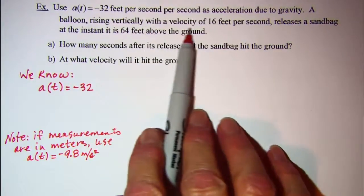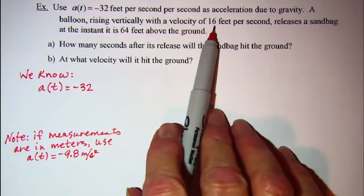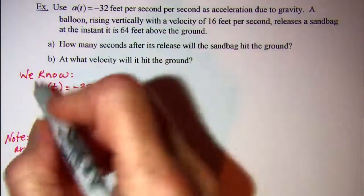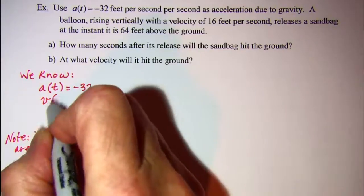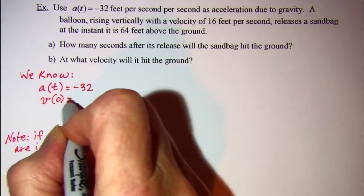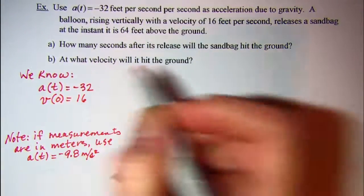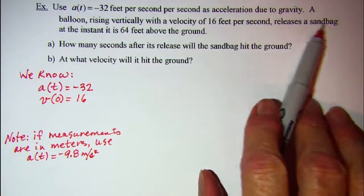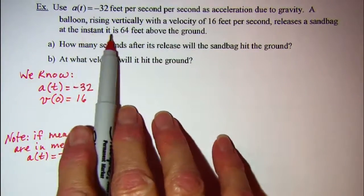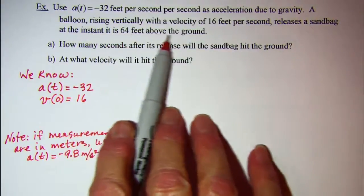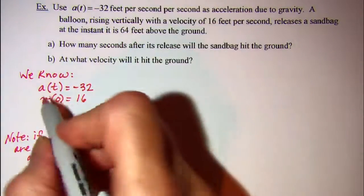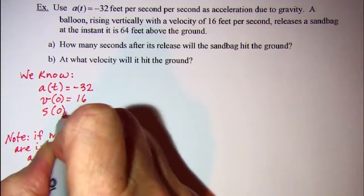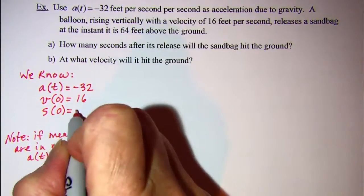The balloon is rising vertically with a velocity of 16 feet per second, so that tells us that our velocity at time 0 is 16. It releases the sandbag at the instant it is 64 feet above the ground, so that means our position at time 0 is 64.